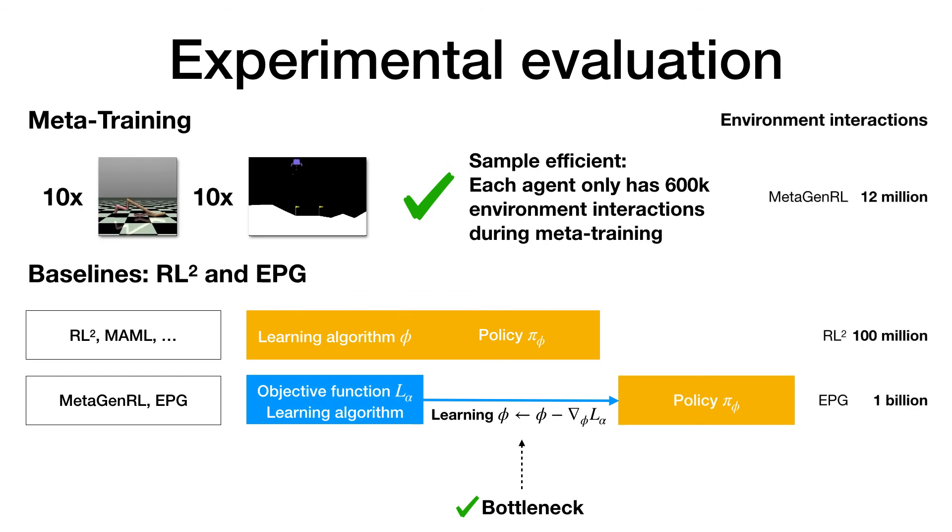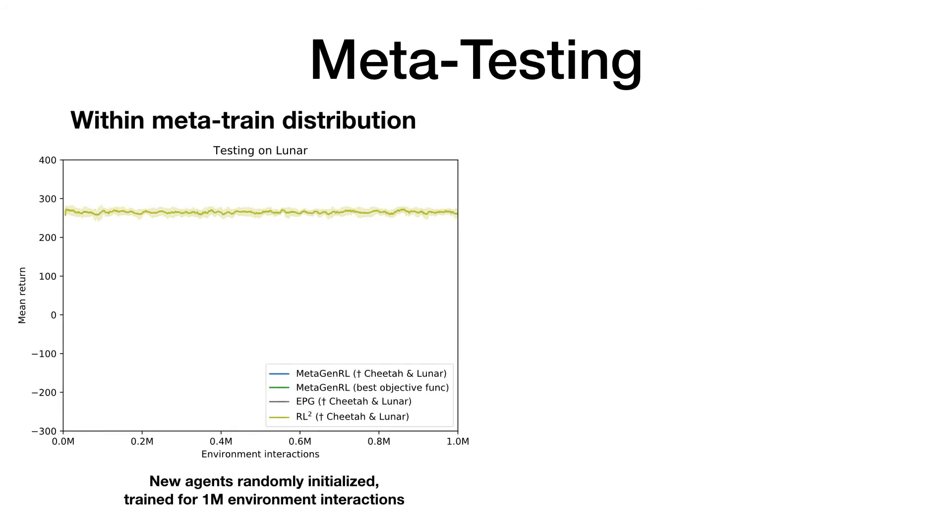In our experiments, we train RL² for 100 million and EPG for 1 billion steps. First, we meta-test a new agent on lunar lander, an environment it was previously trained on. Our baseline, RL², immediately achieves optimal performance, whereas EPG doesn't seem to find a good solution given the number of interactions we considered. Our trained objective function successfully reaches the optimal policy, and the best-performing objective function gets there even faster.